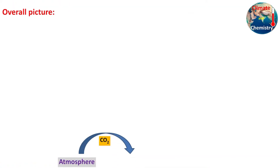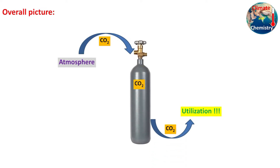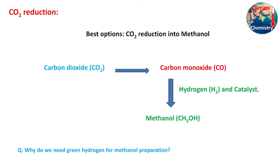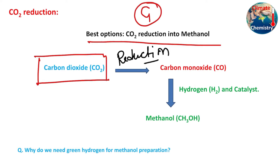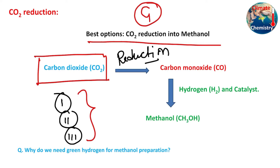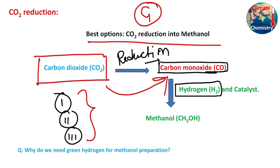The overall picture is: first, atmospheric CO2 will be separated, stored in a cylinder, and utilized for preparation of value-added chemicals and fuel. The best option is conversion of carbon dioxide into methanol, since both CO2 and methanol are C1 species — one-carbon feedstocks. CO2 can first be converted into carbon monoxide (CO), and this reduction can be done using three methods: photochemical, electrochemical, or a combination of the two — photoelectrochemical. The resulting CO is more reactive and reacts with hydrogen in the presence of a catalyst to produce methanol.